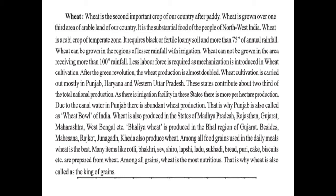Wheat is also produced in Madhya Pradesh, Rajasthan, Gujarat, Maharashtra and West Bengal. Balia wheat is produced in the Bhal region of Gujarat; besides Mahasana, Rajkot, Himatnagar, and Kheda also produce wheat. Among all food grains, wheat is the best and most nutritious. Many items like Rotri, Bhakri, Sev, Shiro, Lapshi, Ladu, Sukhdi, Bread, Puri, Cake, and Biscuit are prepared from wheat. That is why wheat is also called the king of grains.